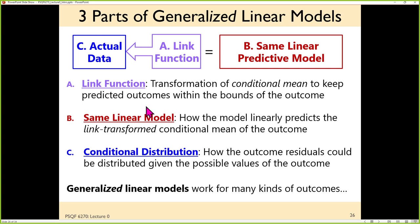Right now, if all you know is a general linear model — traditional multiple regression and ANOVA — the only conditional distribution you've seen is normal. That's where people start, but not where you have to stay. The normal distribution is usually paired with what's known as an identity link function — a fancy way of saying times one, no transformation. The normal distribution says the E's are continuously distributed and go on forever. The absence of a link function says there's no need to transform the predicted outcome to keep it within boundaries, because there are no boundaries.